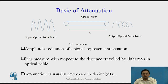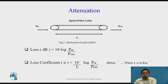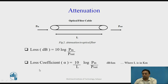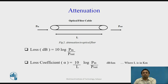Now we'll see how attenuation is calculated. Attenuation is calculated through the loss coefficient. The loss in dB is calculated as 10 times log base 10 of P_in over P_out, where P_in is the input power and P_out is the power received at the output end of the optical fiber of length L.